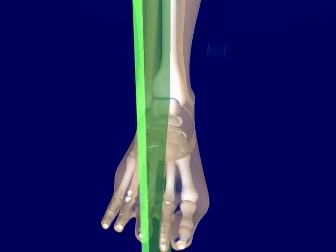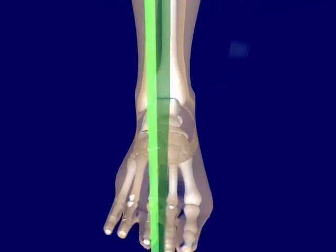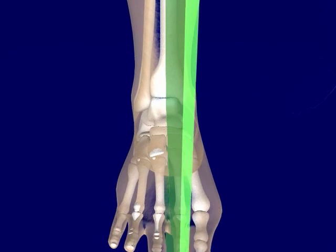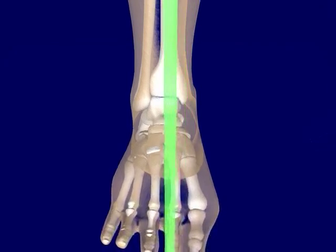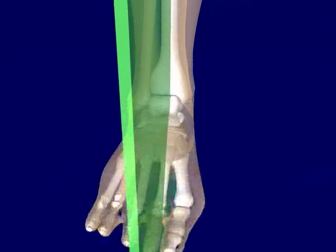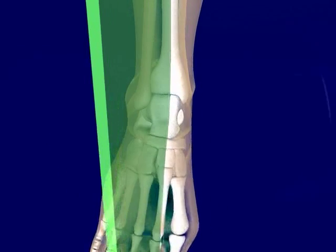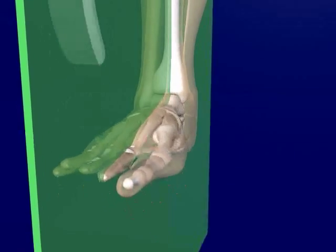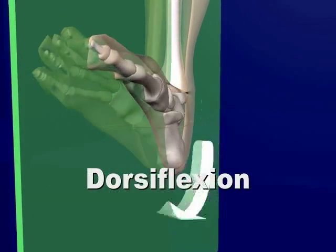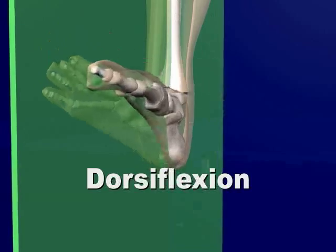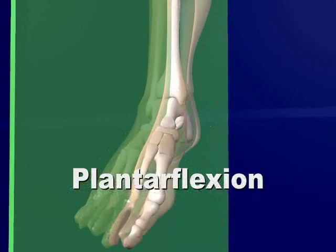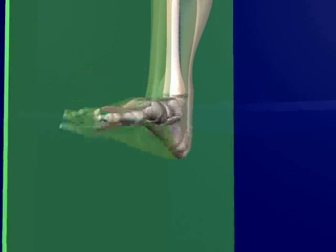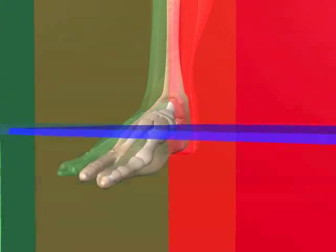The sagittal plane, which in the foot is approximated to the osteological axis of the second metatarsal, separates the foot into medial and lateral halves. Parallel to this plane, dorsiflexion and plantarflexion refer to the relationship between the surface of the foot and the anterior surface of the leg. Dorsiflexion is when the dorsum of the foot moves toward the leg, whereas plantarflexion is when the dorsal surface of the foot moves away from the leg. It should be noted that the process of walking happens in the sagittal plane.